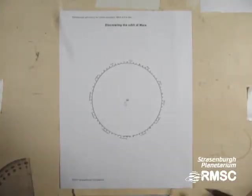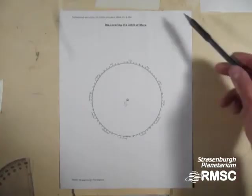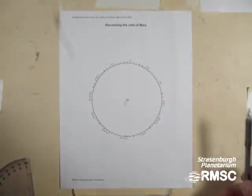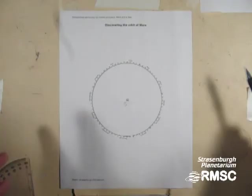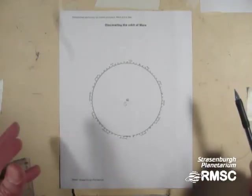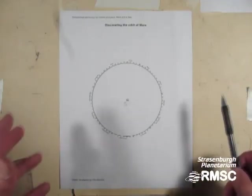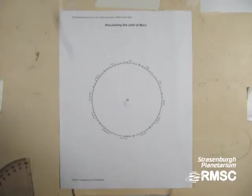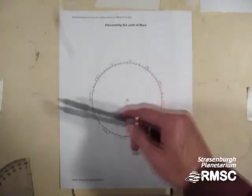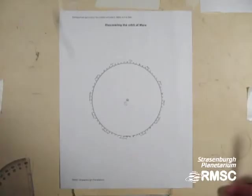Kepler was also pretty confident that Mars revolves around the Sun somewhere outside the orbit of Earth, but he didn't know how far out, and he didn't know the shape of the orbit of Mars, whether it was a circle or an oval or some other kind of shape. Kepler also knew that Mars revolves around the Sun about every 687 days, so he knew how long a Mars year is.